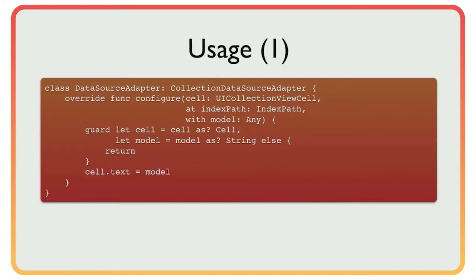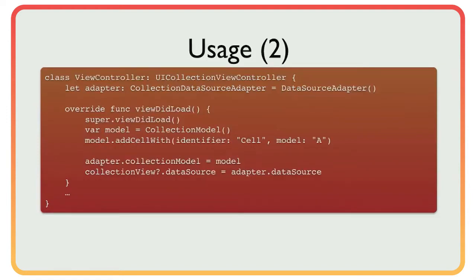Here's a simple usage example. We have one cell type with a reuse identifier 'cell'. We make a subclass of the collection data source adapter, and inside the configure method we know we only get one cell type and one model type. We do a guard statement, and if everything is fine we set the model on the cell. Then we put it into a collection view controller to make the collection view show our data.